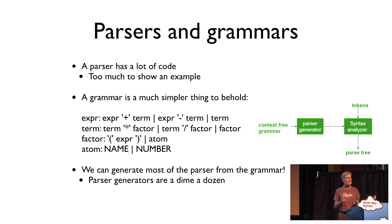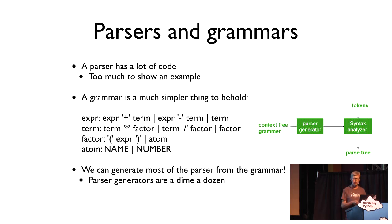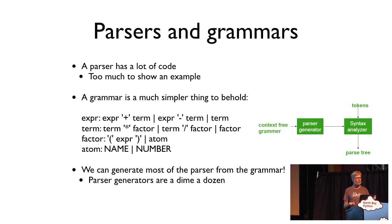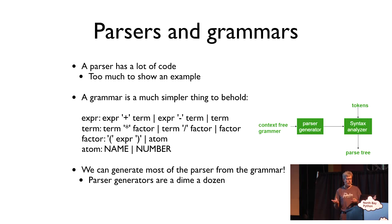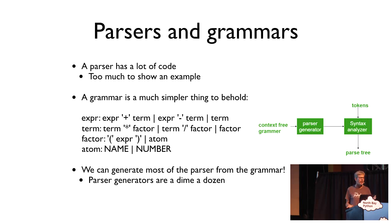Fortunately, we don't have to write all that code to parse that language, because we can use something called a parser generator that takes the grammar as input and produces a parser as output. So we see the von Neumann thing where data is also code — the output of the parser generator is data from the generator's perspective, but code from the compiler's perspective.